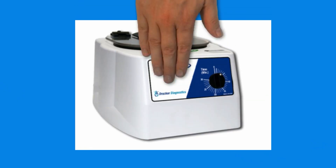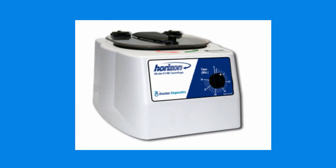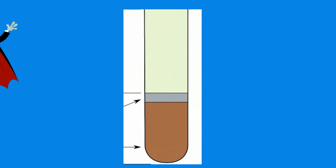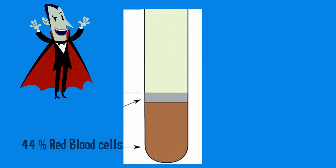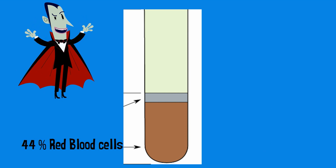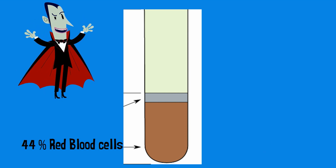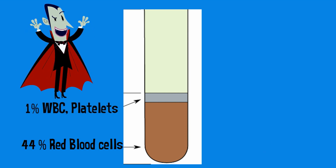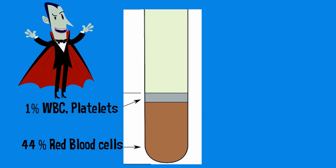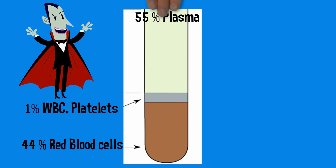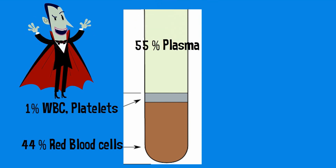If you were to place blood in a centrifuge and spin it around, here is how it will separate out: 44% will be red blood cells, 1% will be white blood cells and platelets, and 55% will be plasma.